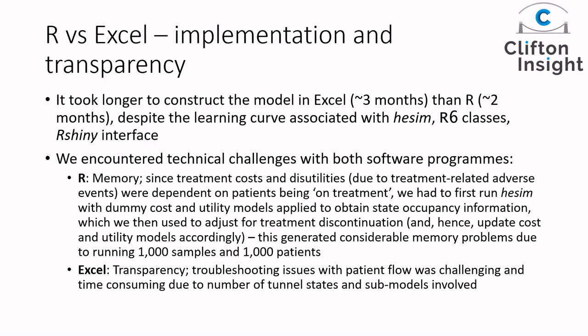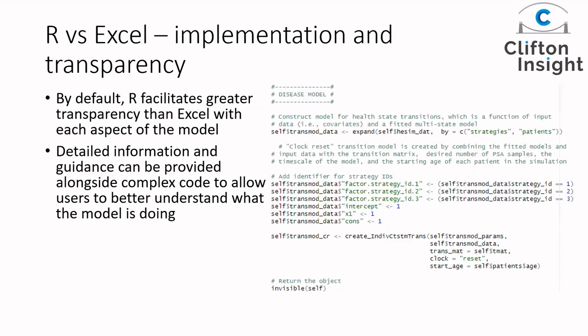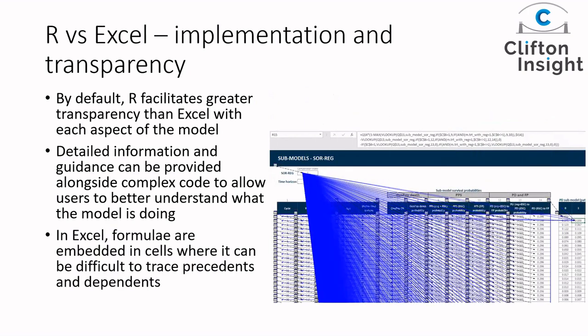In Excel there's an obvious transparency issue. Trying to identify bugs — where they were in the model — was quite difficult because the tunnel states were large and we had different tunnel states for different treatments. R facilitates greater transparency than Excel by default, because we can provide commentary alongside our code to help users understand what the model is doing. In Excel, formulas embedded within cells make it hard to find out what's going on and where source data are coming from. It's very hard to jump into an Excel model and understand what's happening.